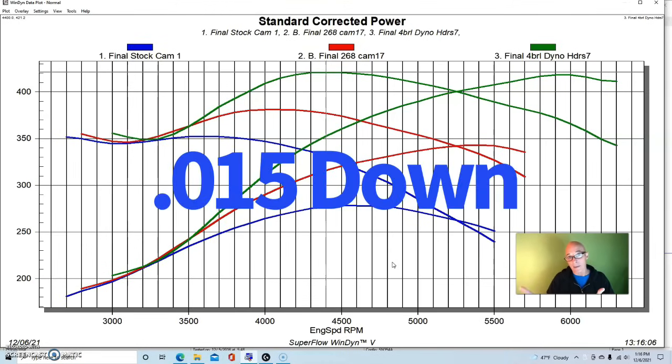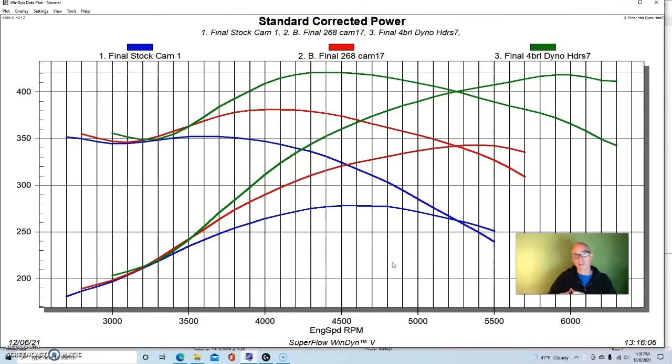down in the hole in this combination. It was a dish piston and it had valve reliefs. But what we did was mill the block to bring the piston up to zero depth, which helped us with our static compression.